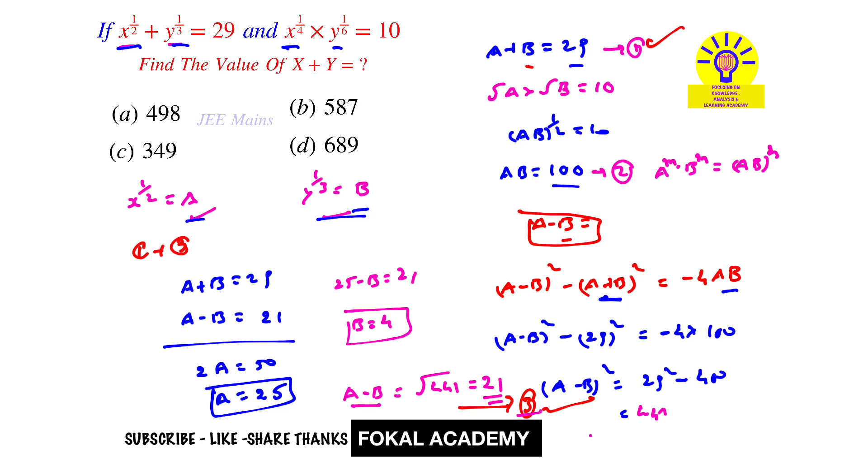Now we have a value and b value. We can easily find x values and y values. From this, x equals a square, which is 25 square, equals 625.